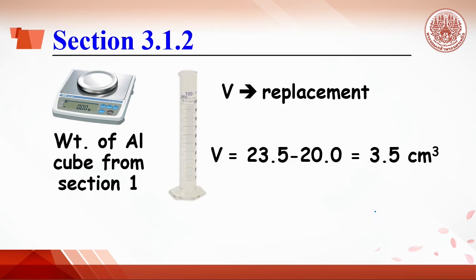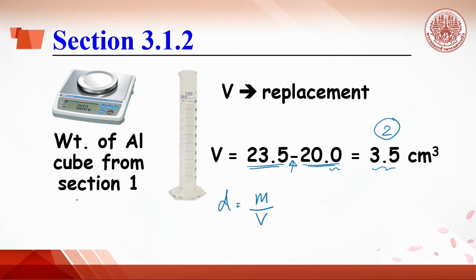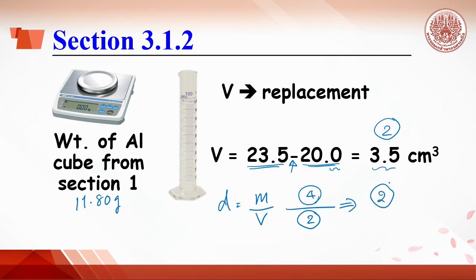If the volume of the aluminum cube is estimated from water displacement in the cylinder, for example the first volume is 20 mL and 23 mL after adding the aluminum cube, then the difference has the lowest decimal — giving two significant figures. The density is then mass divided by volume: 11.80 grams (four significant figures) divided by the volume with two significant figures, so the answer should have only two significant figures.